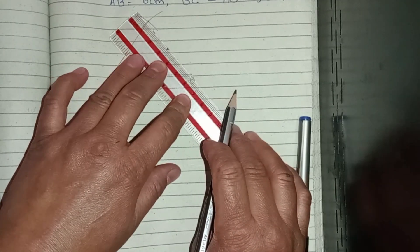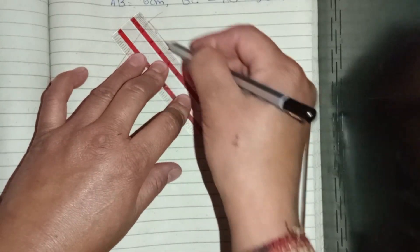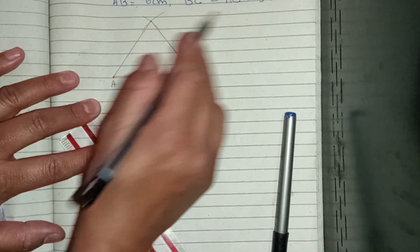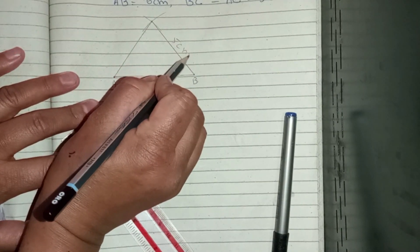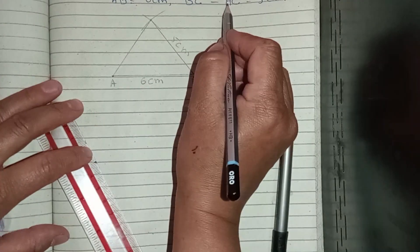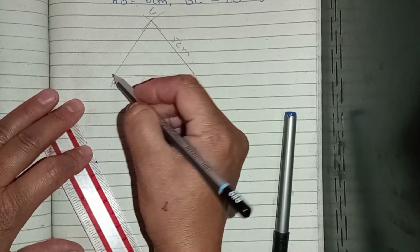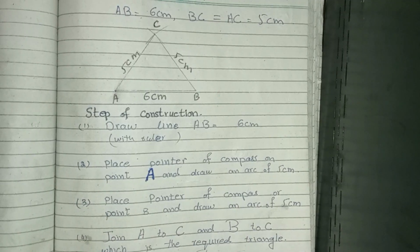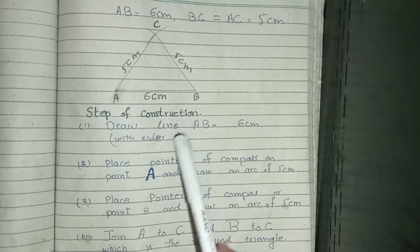So our triangle is now complete. AB is 6 cm, BC is 5 cm, and CA is also 5 cm. The triangle is complete.